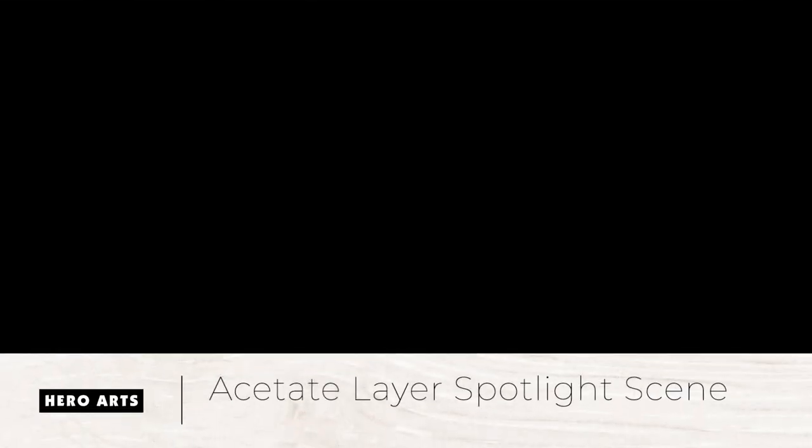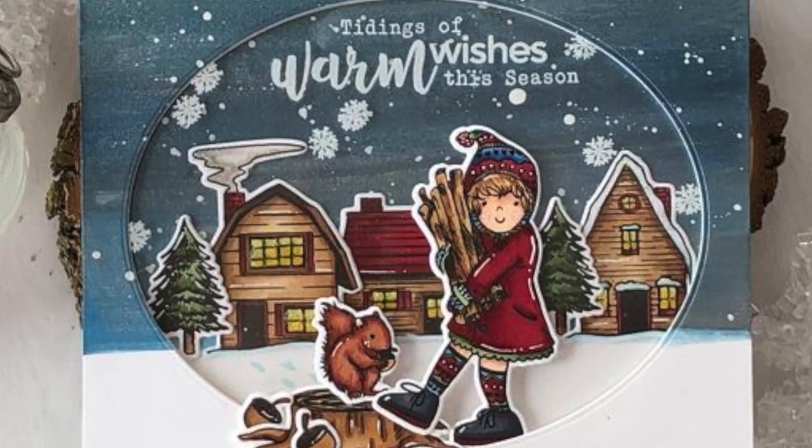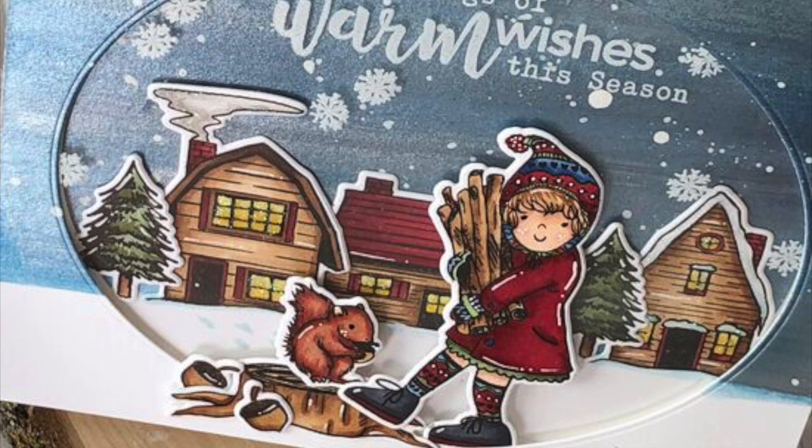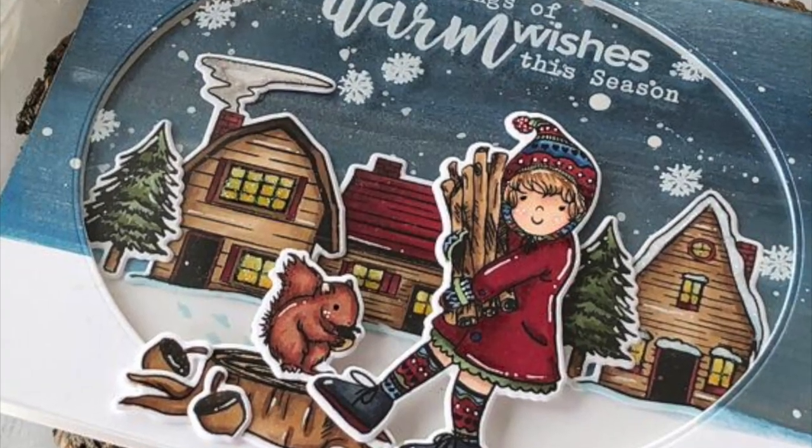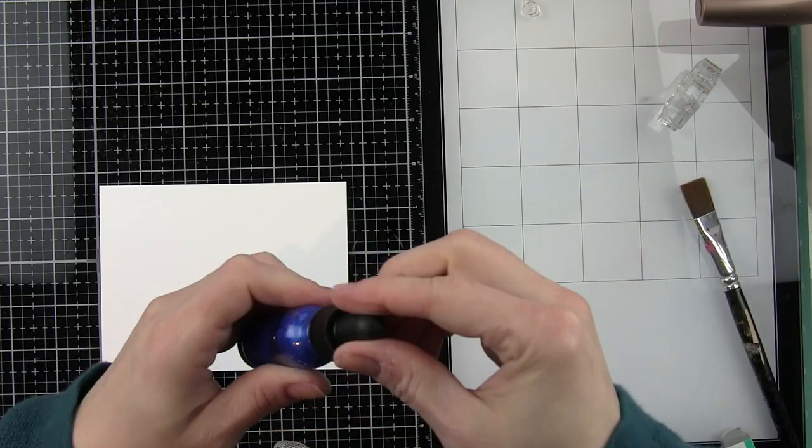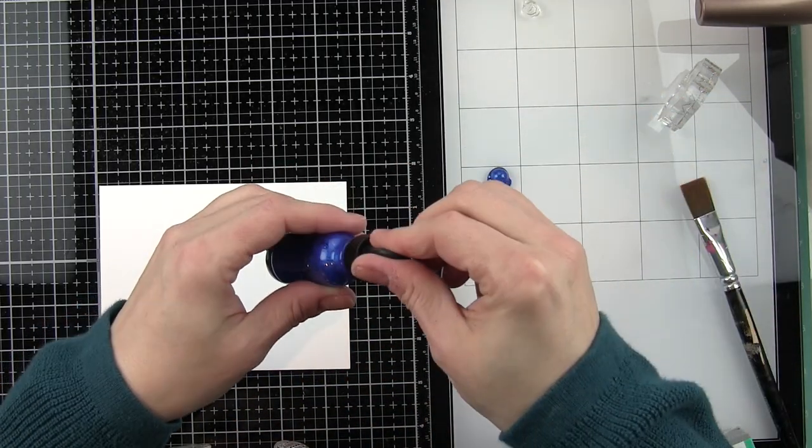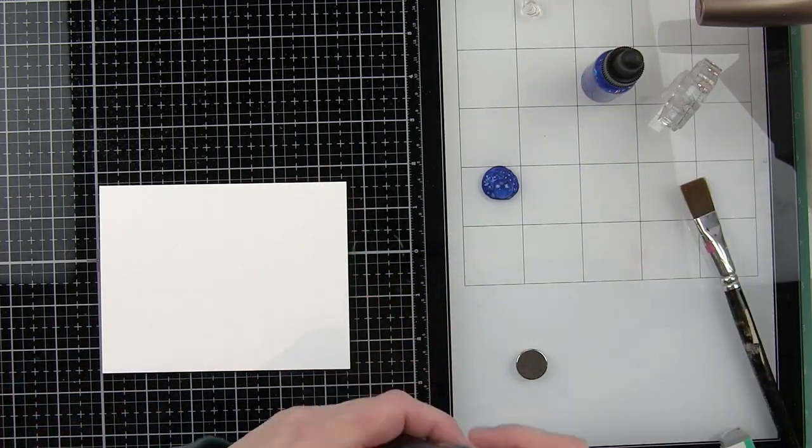Hi everyone, it's Nicole here today for Hero Arts with a card featuring an acetate layer spotlight scene card. Today I'm going to use a piece of acetate to create this window scene that you could create into a shaker if you want to, or you could do what I did and just create that dimensional layer that helps set apart the forefront of the scene from the background.